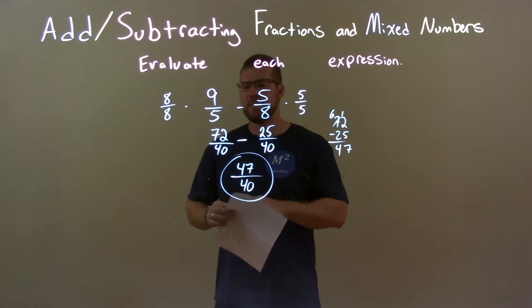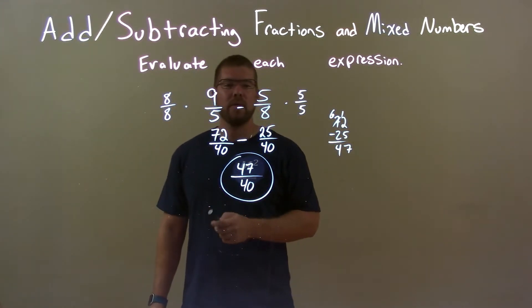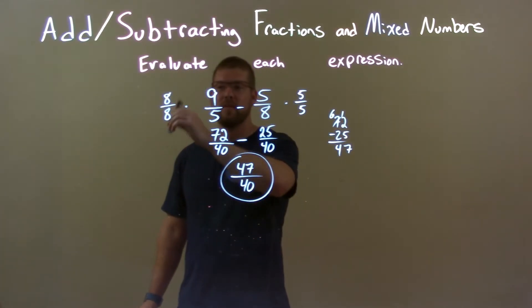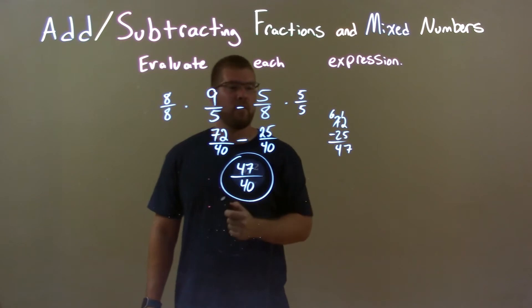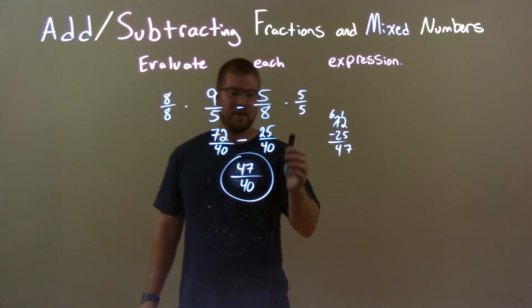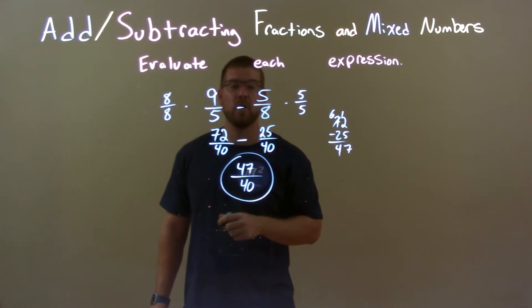Okay, so quick recap. We're given 9 over 5 minus 5 eighths. And so what we wanted to do is first, we found a common denominator. I did that by multiplying the first number by 8 over 8, the second number by 5 over 5. That gave us 72 over 40 minus 25 over 40. Then from there, we had the same base, so we just subtract the numerators. The numerator came out to be 47. The denominator would still be 40. And so our final answer, again, is 47 over 40.